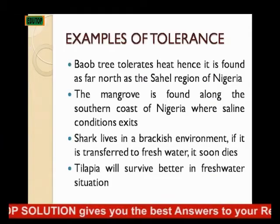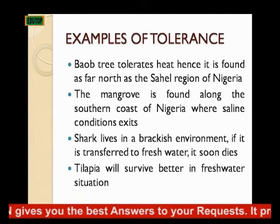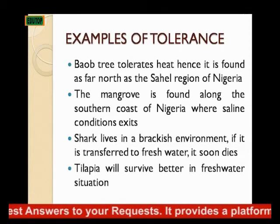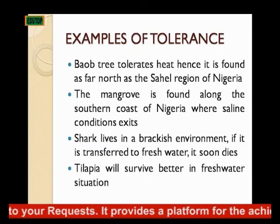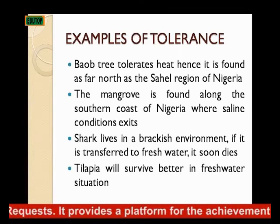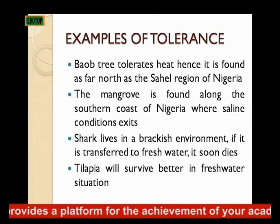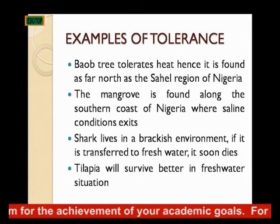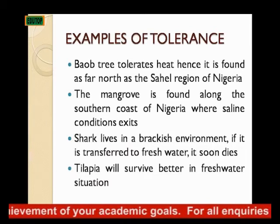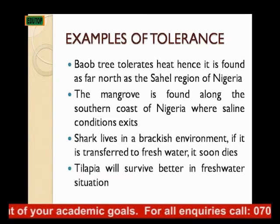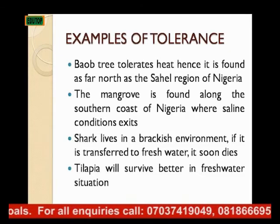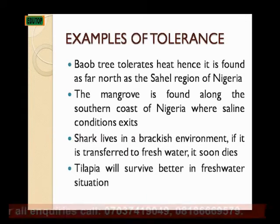Examples of tolerance include the baobab tree tolerating dry conditions, which is why it is found in the far north, such as the Sahel region of Nigeria. The mangrove is found along the southern coast of Nigeria where saline conditions exist. A shark lives in a brackish environment — if transferred to fresh water, it soon dies — while the tilapia will survive in a fresh water situation better.